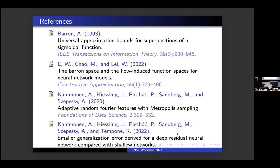Question: When approximating a function, do you pay attention to how many Fourier terms you need? Response: Not at all — we just look at the width of the neural network K. It definitely affects complexity. There are results we haven't worked with yet, but if you have an orthogonal basis and use discrete Fourier, you can get spectral convergence. We haven't done that yet.